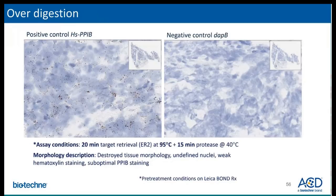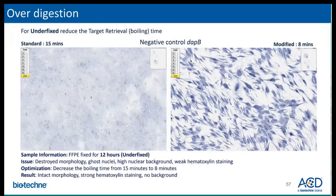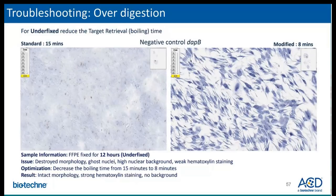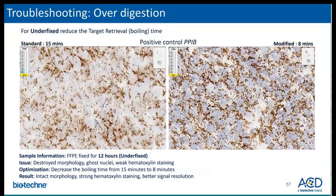As compared to the last slide, this dataset shows tissue that has been over-digested, in which the nuclei are now undefined, using suboptimal tissue morphology, and the PPIB staining is slightly weaker than expected. Here, the target retrieval time was reduced to eight minutes, and that improved the morphology and eliminated the background seen in the negative control. There is better morphology and better signal resolution using the modified target retrieval time, as shown with the positive control probe PPIB.